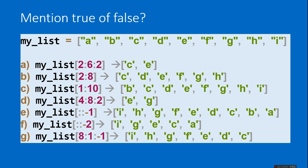The start position 2 means it starts from C, and position 6 means it ends at G. With step 2 it skips one step each time. So my_list[2:] gives ['C','D','E','F','G','H','I'], and with step 2 the answer is ['C','E','G'].